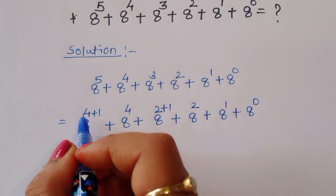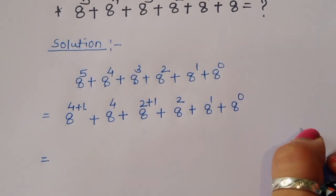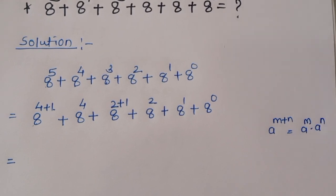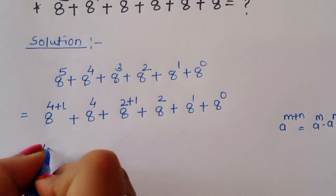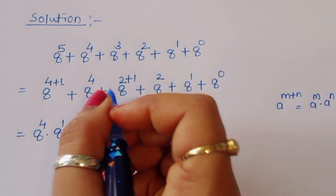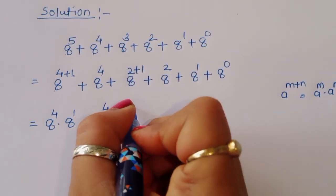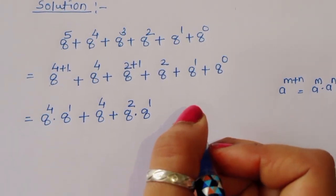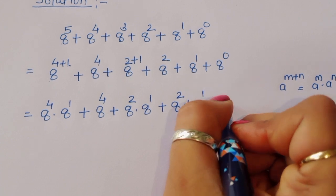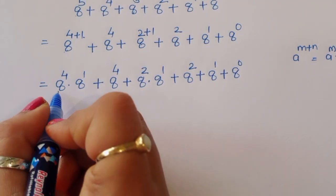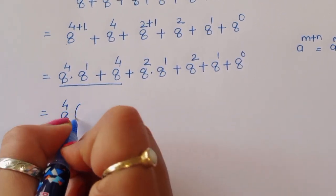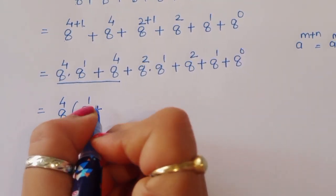Now, 8 power 4 plus 1. Using the formula a power m plus n equals a power m times a power n, we will get 8 power 4 times 8 power 1 plus 8 power 4, plus 8 power 4 plus 8 power 2 plus 8 power 1. Now we can take common 8 power 4.